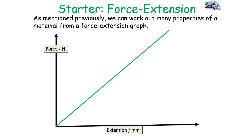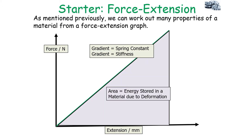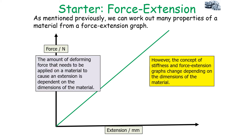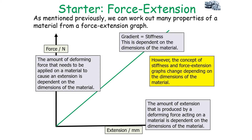We can work out many properties of a material from a force-extension graph. The gradient of a straight line through the origin gives you the spring constant, which is the stiffness of a material, and the area under the line gives you the energy stored due to deformation. However, the concept of stiffness and force-extension graphs change depending on the dimensions of the material — the deforming force and extension produced are both dependent on the material's dimensions.